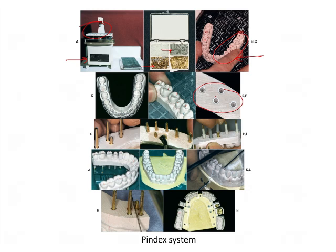Below each tooth you place dowel pins, which are covered by a plastic cap. Then you pour a base. The dowel pins become attached to the cast, and the plastic sleeve goes into the base, forming an individual die. This is the Pindex system.